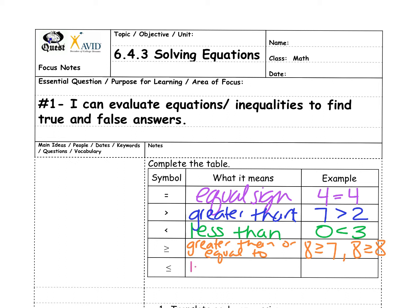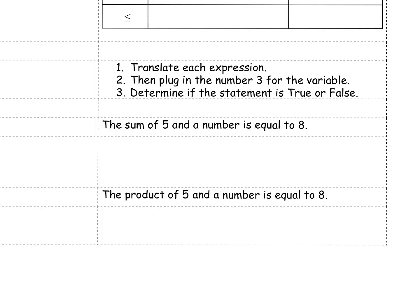And then last, less than or equal to. So 1 is less than or equal to 6. I could also say though 6 is less than or equal to 6. Knowing those inequality symbols, we can now figure out some examples.